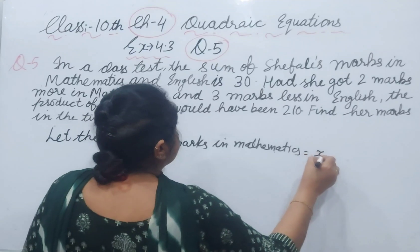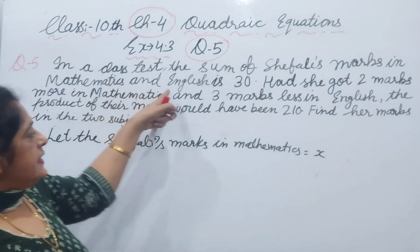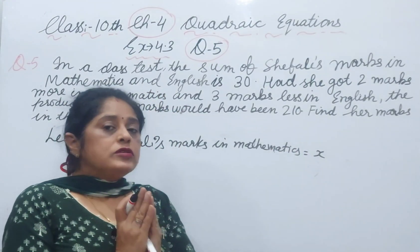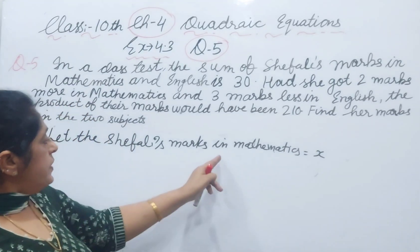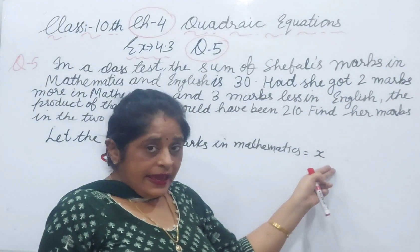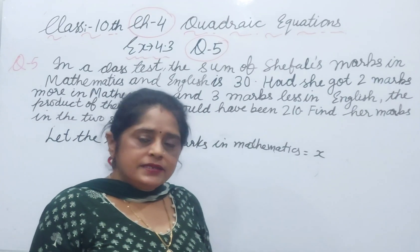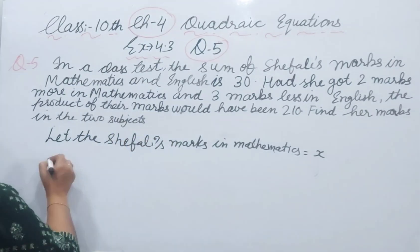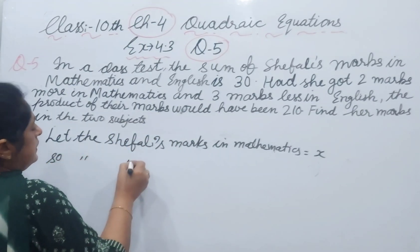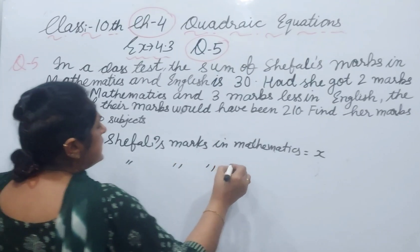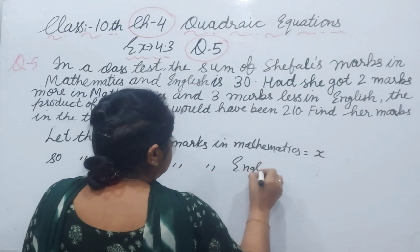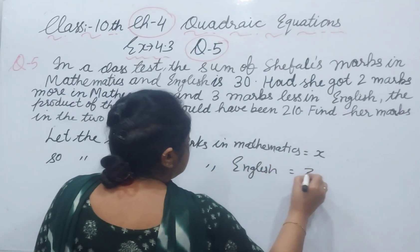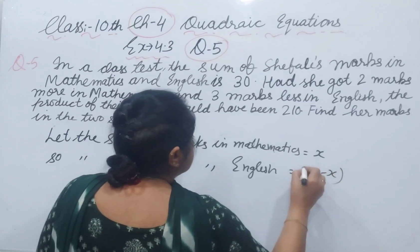Because mathematics and English marks total 30, if we assume marks in mathematics are x, then English marks are 30 minus x. So Shefali's marks in English are 30 minus x.